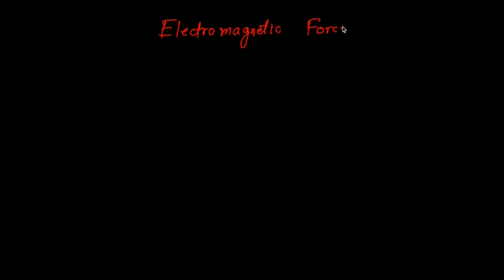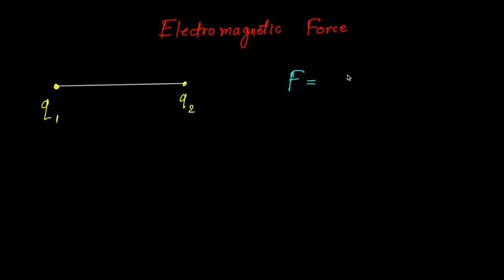Next on the list is electromagnetic force. Let's consider an electrically charged particle with charge Q. This particle experiences force due to all other charged particles surrounding it, and this force is known as the electrostatic force. Suppose we have a particle with charge Q1 and another with charge Q2 — there is an electrostatic force of attraction or repulsion between these two, given by F equals K times Q1 times Q2 over R squared.